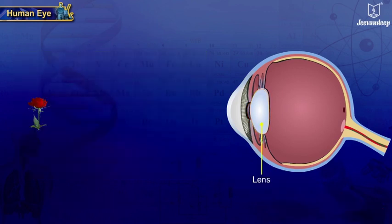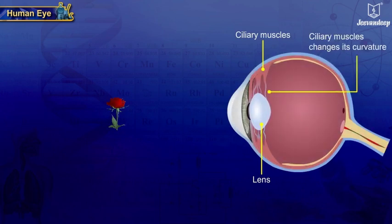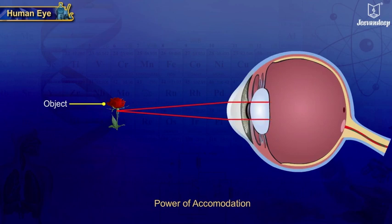The lens, with the help of the ciliary muscles, has the capacity to change its curvature to adjust the focal length. This adjustment, known as power of accommodation, helps the eye to focus on objects at various distances. Thus, a real inverted image is formed on the retina.